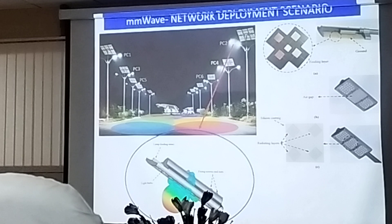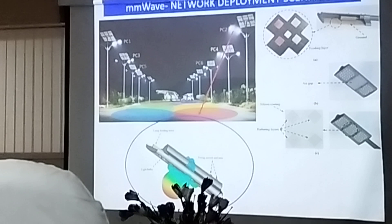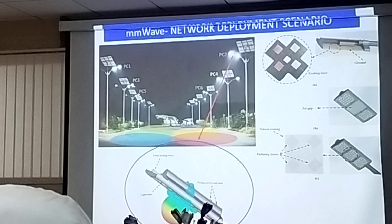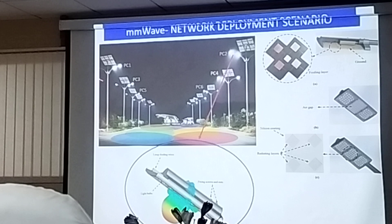Another interesting thing is called the smart base station, where the base station antennas are installed in between street lights. It serves a dual purpose: the person walking in that area gets data rate as well as street light. This is how the antennas are designed and kept inside, in between the two LED panels.